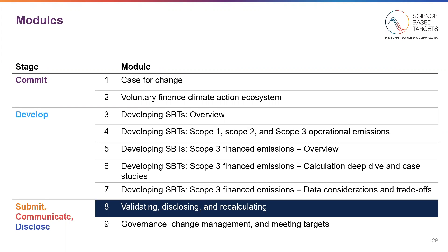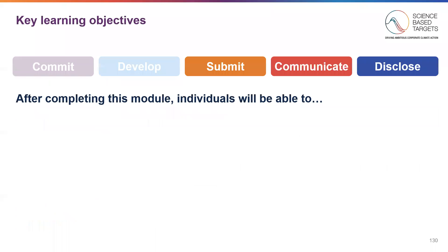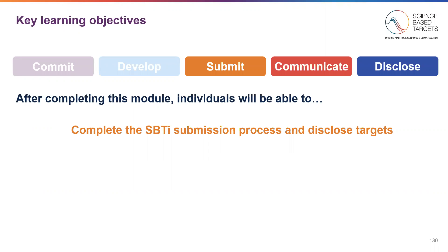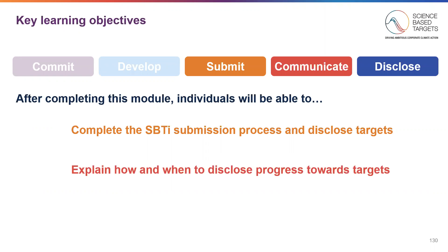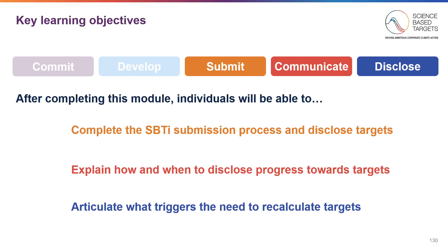At this point, you should be familiar with how to develop Scope 1, 2, and 3 Baseline and Target Calculation, which were overviewed in Modules 3 through 7. After completing this module, you will be able to: complete the SBTI submission process and disclose targets; explain how and when to disclose progress towards targets; and articulate what triggers the need to recalculate targets. Let's get started!